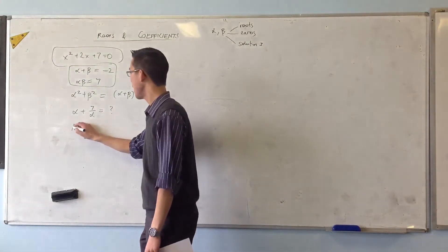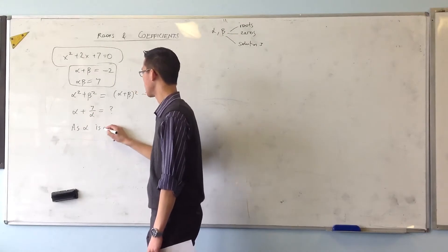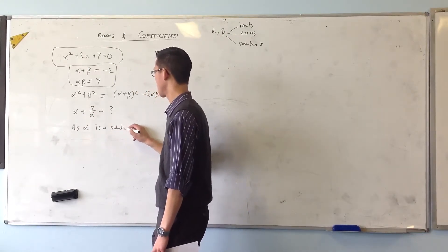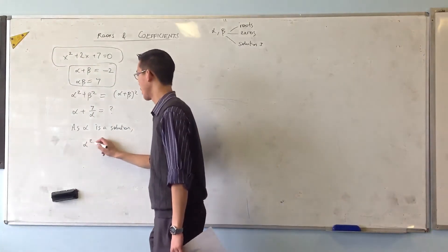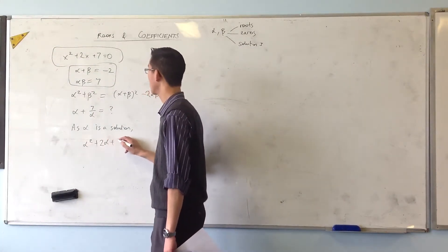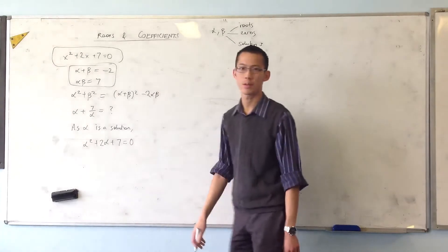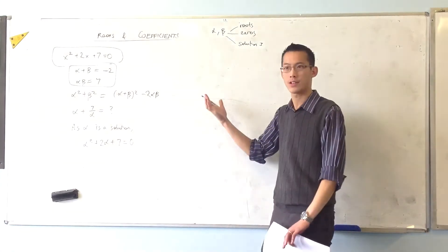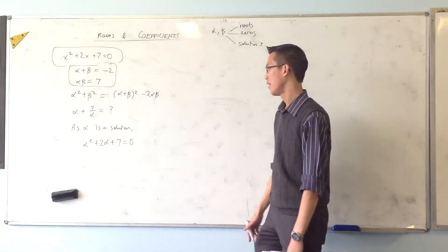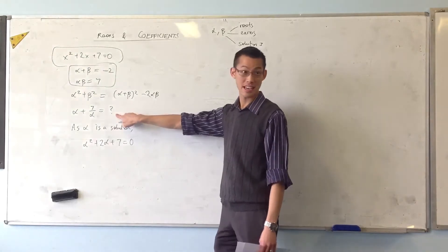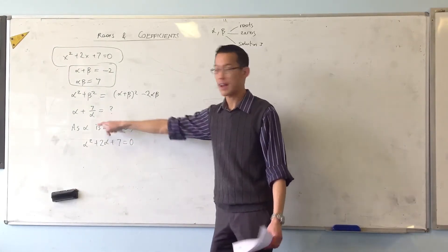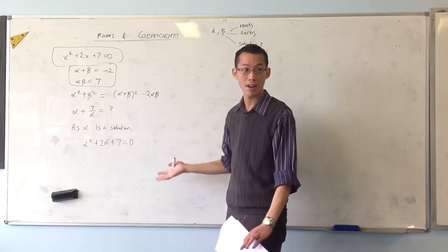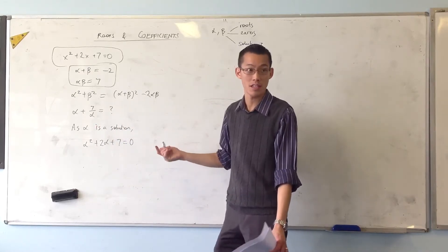So therefore, as alpha is a solution to the original equation, I can say alpha squared plus two alpha plus seven is equal to zero. Does that make sense? It satisfies the original equation. So does beta. Now what does this have to do with this? Can you see it? That seven on alpha kind of gives it away, right? I have to divide through everything by alpha, which I can do because alpha is not zero.